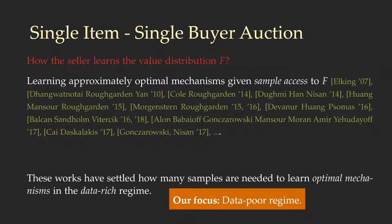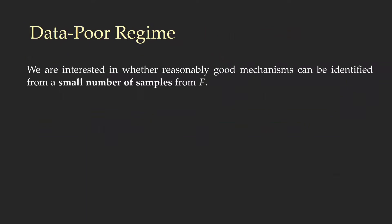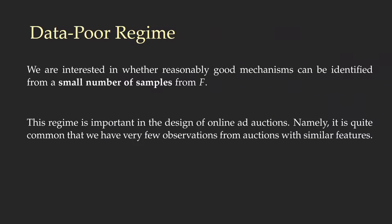In this work, we focus on the data-poor regime, which is not yet well understood. In the data-poor regime, we are interested in whether reasonably good mechanisms can be identified from only a small number of samples from the distribution F.